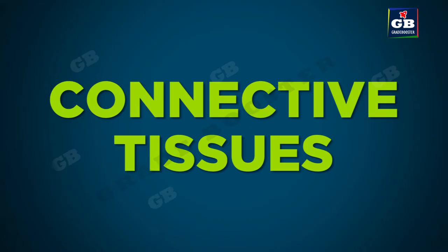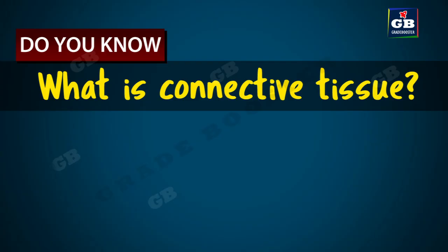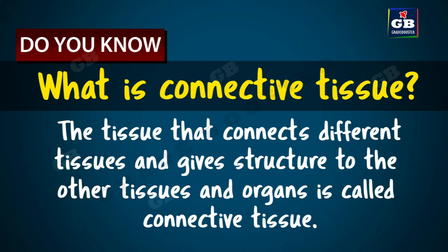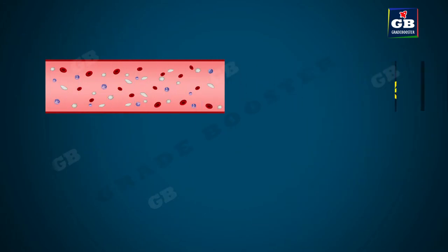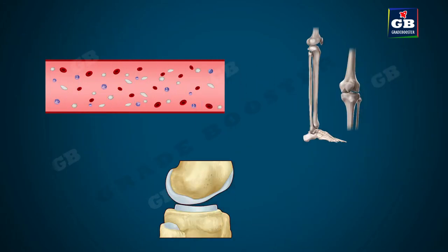Connective tissues. In this video we will learn about connective tissue. What is connective tissue? The tissue that connects different tissues or organs and gives structure to other tissues and organs is called connective tissue. Blood, bones, and cartilage are the examples of connective tissue.